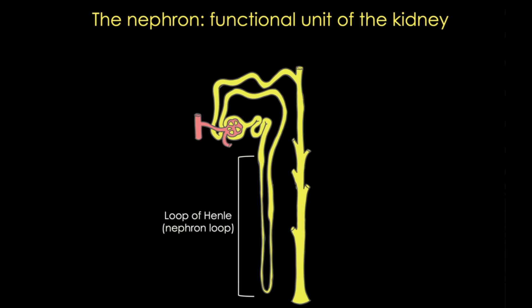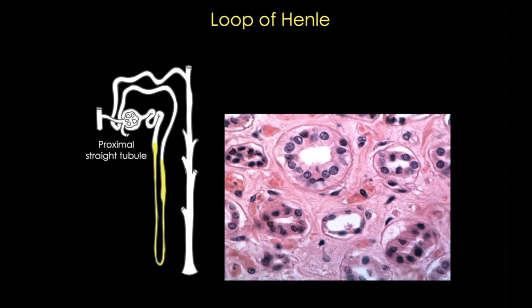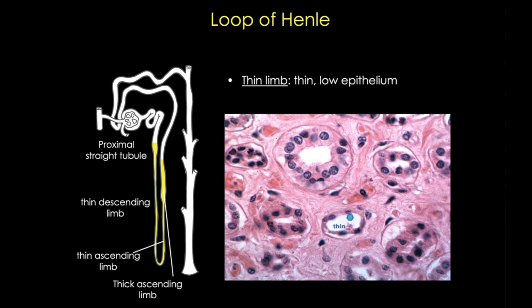Let's start with the nephron loop, or the loop of Henle. Henle's loop is the continuation of the proximal straight tubules and is located in the medulla. This is a u-shaped structure that consists of a thin descending limb, a thin ascending limb, and a thick ascending limb. In this micrograph, you can compare the thin limb with its typical low squamous epithelium with the thicker simple cuboidal epithelium of the thick ascending limb.